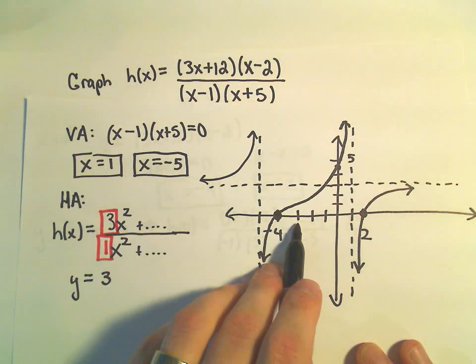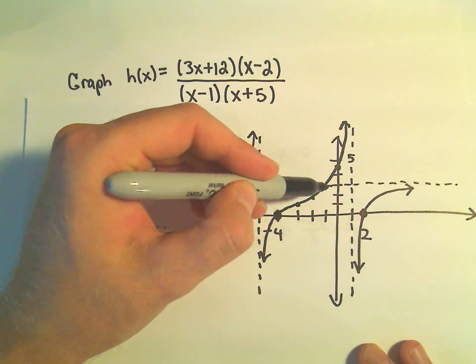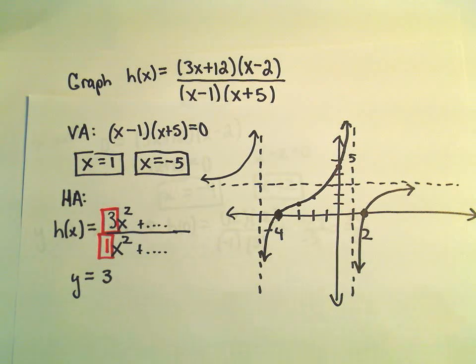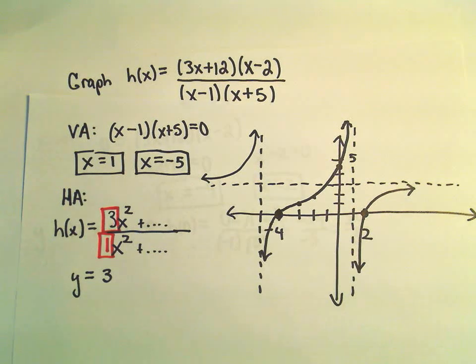And at negative 3, negative 2, negative 1, maybe my y value should be a little higher. Who knows? You can figure that out exactly by plotting points. But sort of a pretty rough graph. I think this would be a very reasonable sketch.